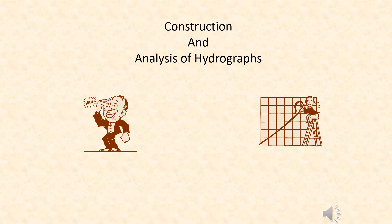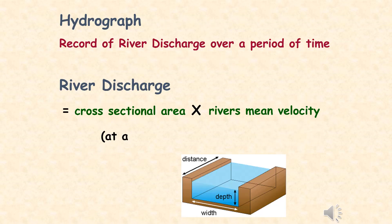For us to fully understand floods, we need to understand hydrographs. A hydrograph is a record of river discharge over a period of time — a graphical representation. One of the most important factors is river discharge, which is calculated by multiplying the cross-sectional area of the river by the river's mean velocity at any given point.